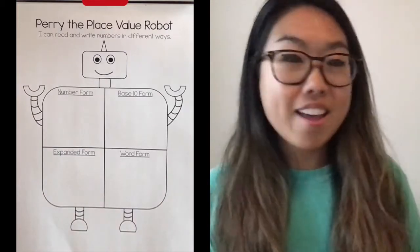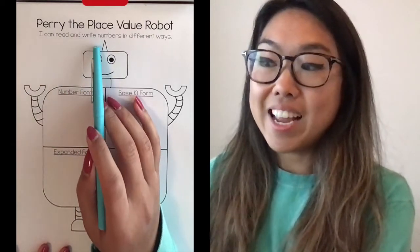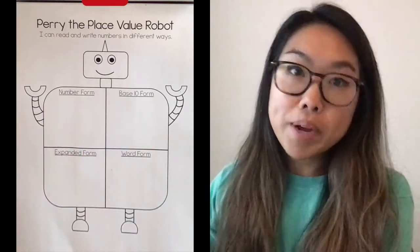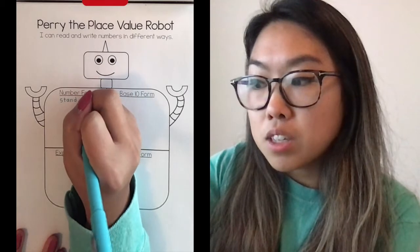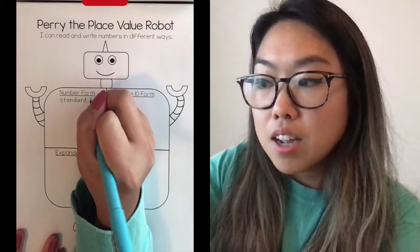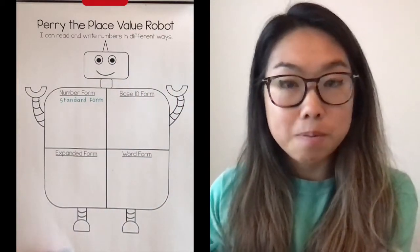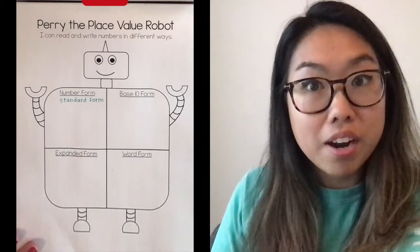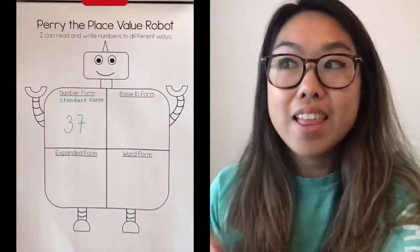I have a friend here who's going to help me teach you about place value. This is Perry, the place value robot. Perry is going to help us understand how to read and write numbers in different ways. The first is number form — you might also hear people call this standard form. If you repeat the words and explain it to yourself out loud, that's going to help you remember. So when I think about number form or standard form, I'm thinking: what is the number when I write it down? If I have 37 as my number, that's the number form.